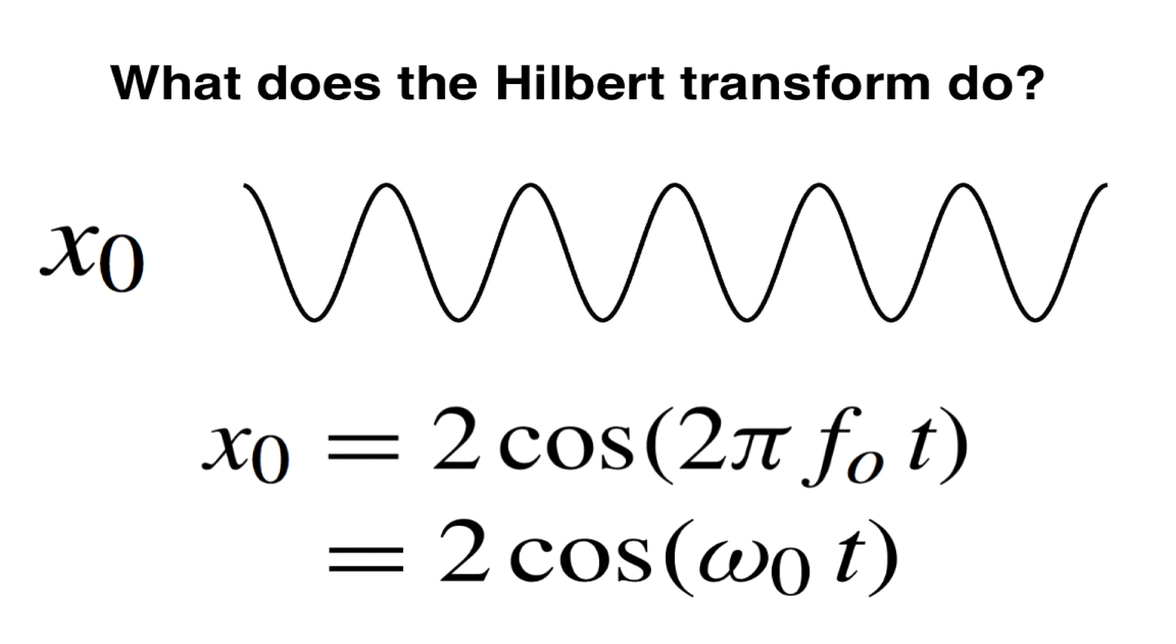Where here we've simplified the notation by defining omega0 equal to 2 pi f0. We're just doing that so we don't have to write 2 pi f0 over and over again.